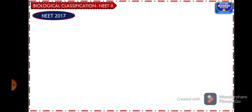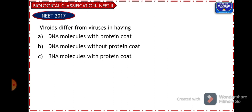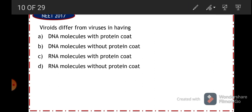From NEET 2017: viroids differ from viruses in having — DNA molecules with protein coat; DNA molecules without protein coat; RNA molecules with protein coat; RNA molecules without protein coat. This is a repeated concept — viroids are RNA molecules without protein coat. Option D is the answer. Viroids are infectious RNA particles without protein coat.